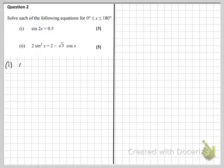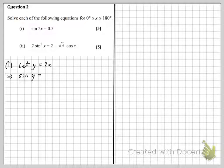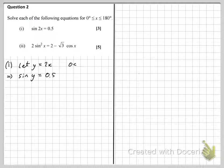And the trick is to use a substitution of some other variable. It doesn't have to be y. I use y just because we've just used x. So if we let y be 2x, then the whole thing becomes just sine y equals 0.5.